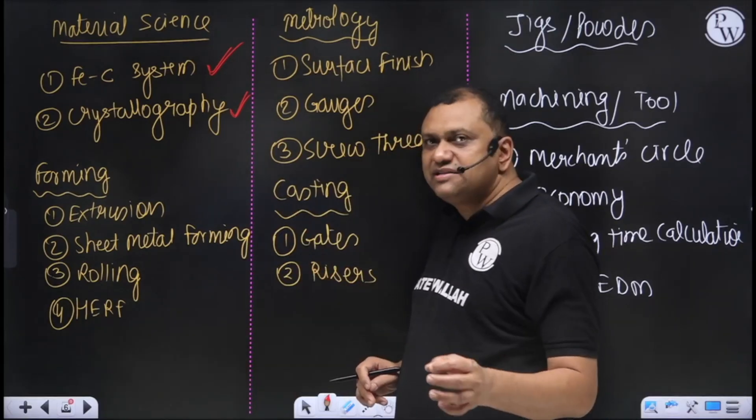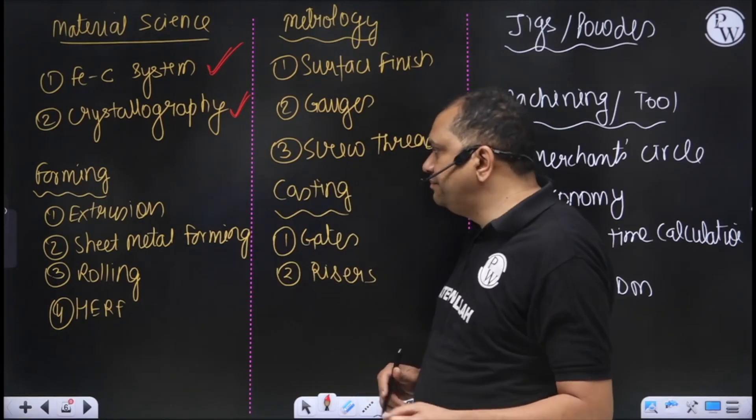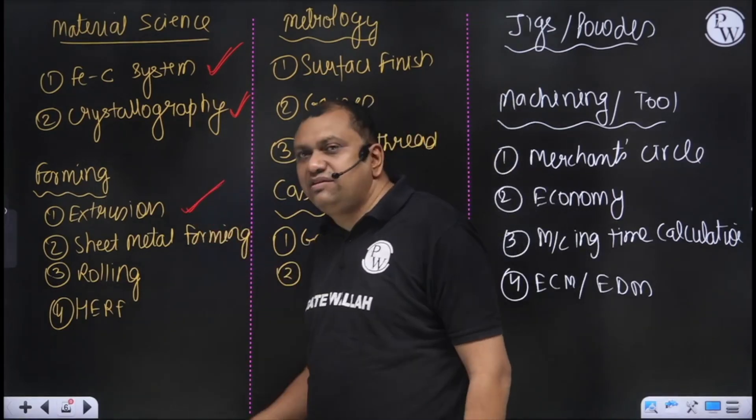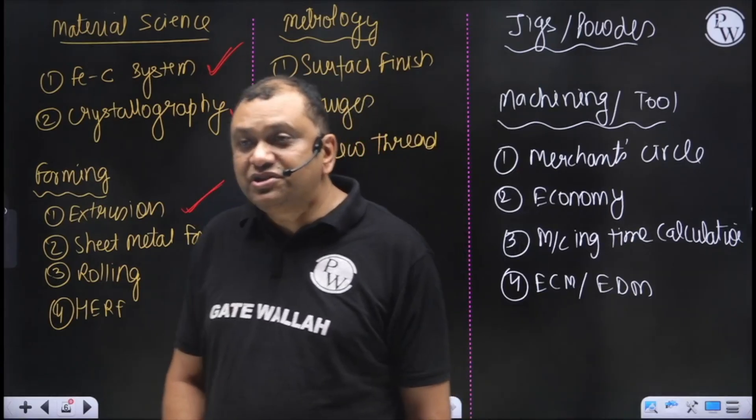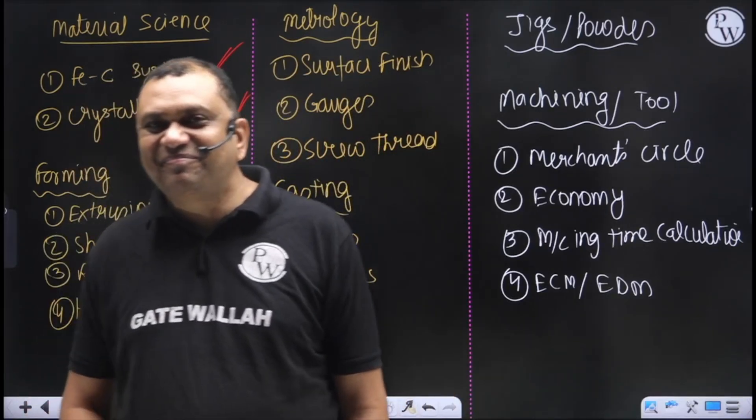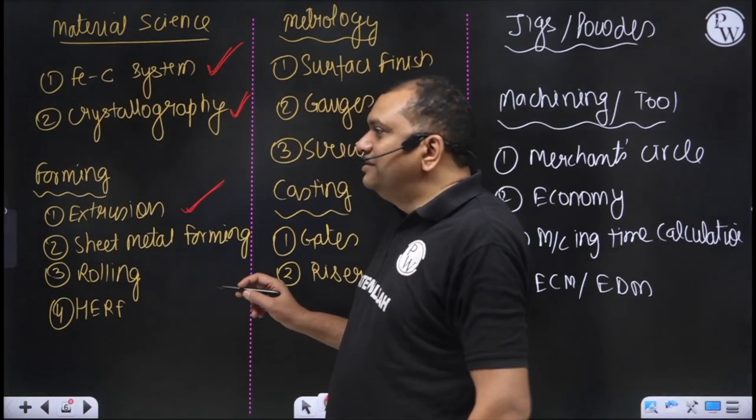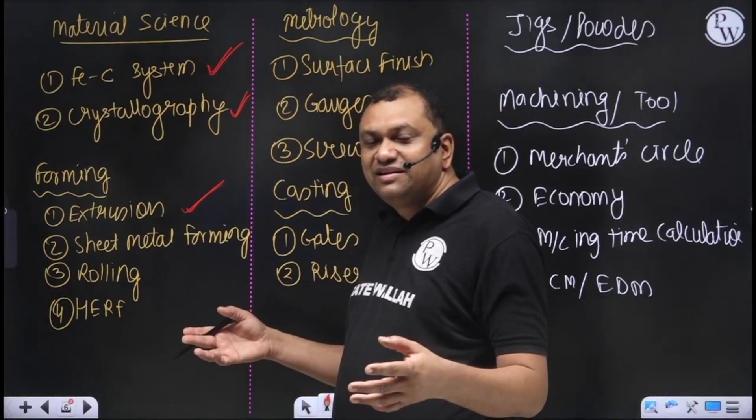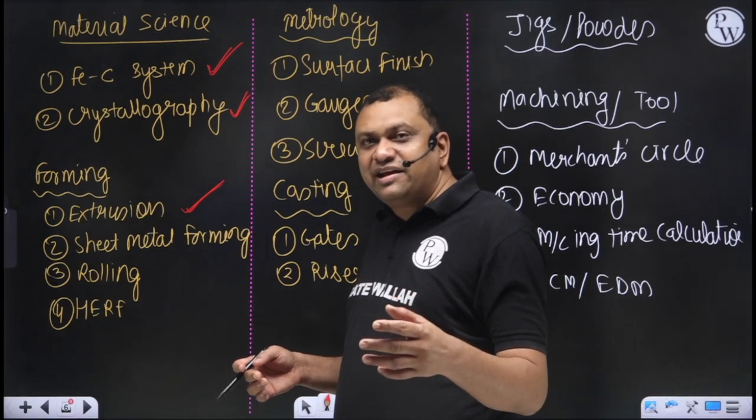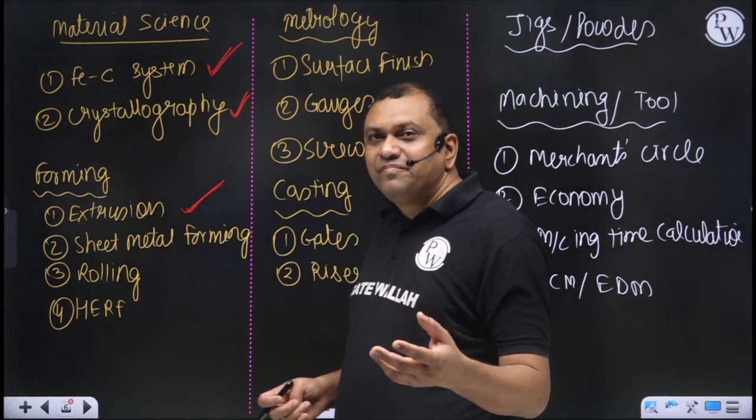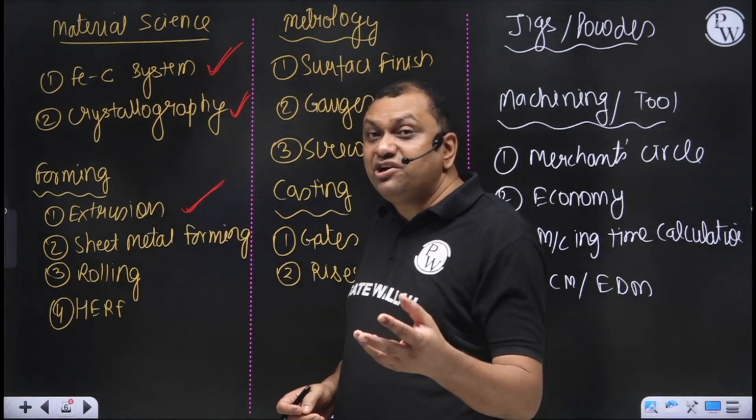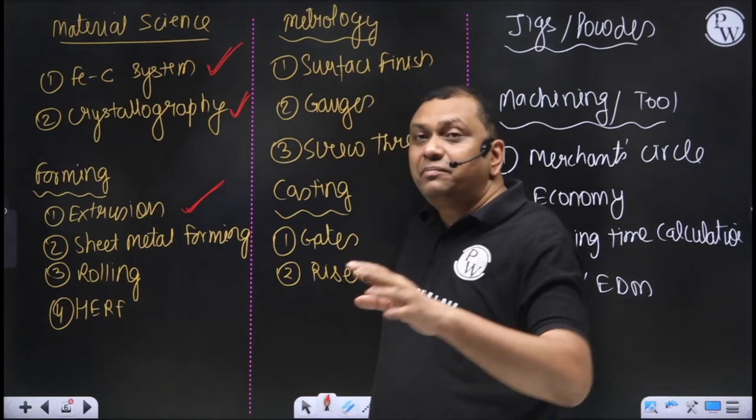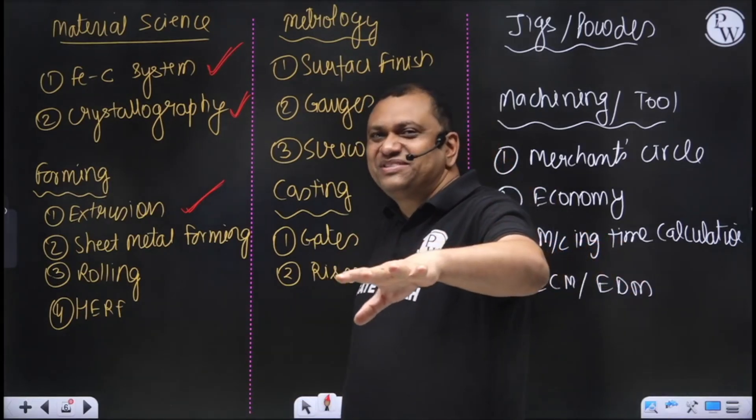As far as forming is concerned, I feel that one question may come from extrusion this year. But you don't have to go for the entire slab analysis - primarily direct versus indirect, how much additional pressure is required to overcome friction between the billet and drum. That kind of workbook on extrusion you should focus on.